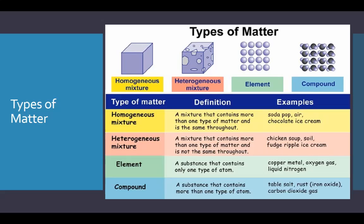An element is a substance that contains only one type of atom — copper metal, oxygen gas, liquid nitrogen. A compound, by contrast, contains more than one type of atom — table salt, rust, carbon dioxide gas.